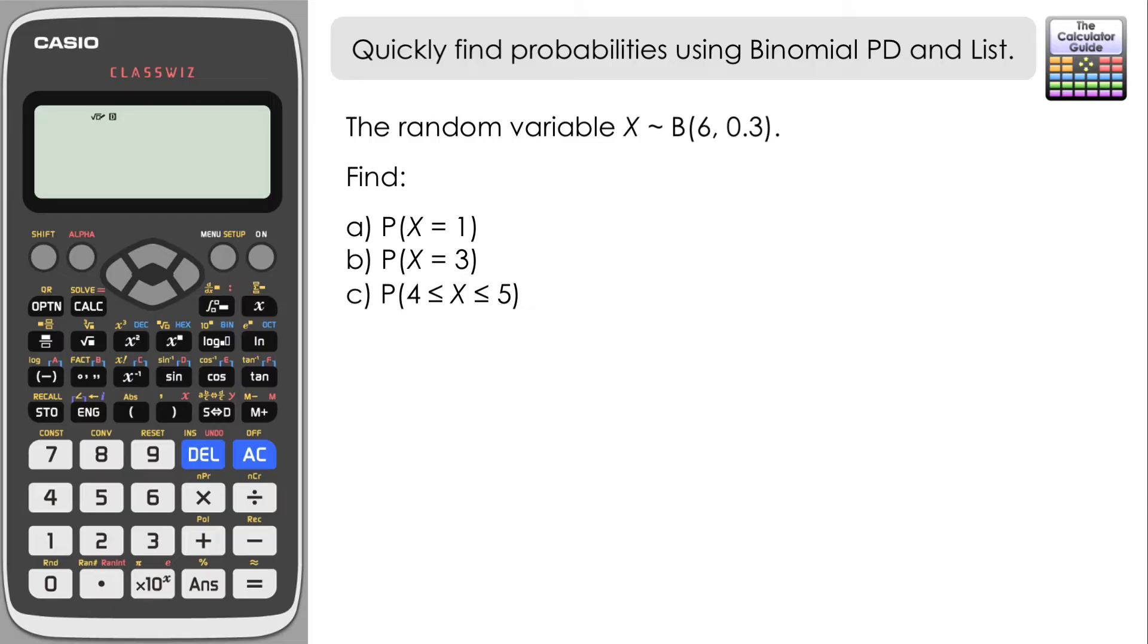And we've got to find the probability that x equals 1, the probability that x equals 3, and the probability that x is greater than or equal to 4 but less than or equal to 5. And with that last question there, part c, just remember that the binomial is a discrete distribution. So what that's really saying is we're looking for the probability of x being either 4 or 5.